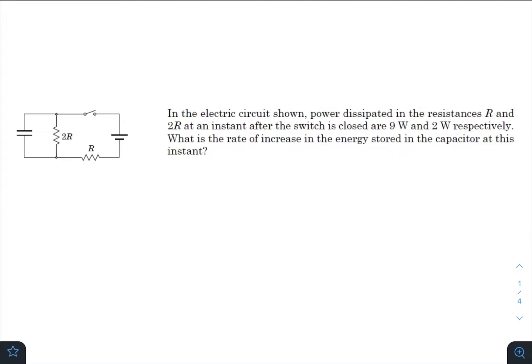Hey, what's up everyone. I hope you're all doing great. In today's question, we have an electric circuit where power dissipated in the resistances R and 2R at an instant after the switch is closed are 9 watts and 2 watts respectively. What is the rate of increase in the energy stored in the capacitor at this instant?